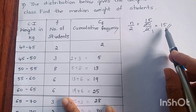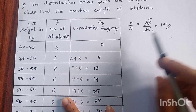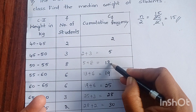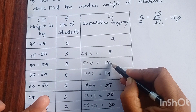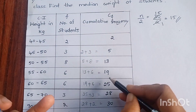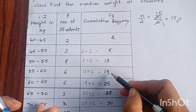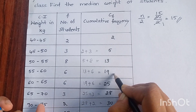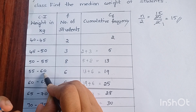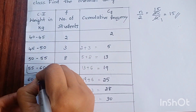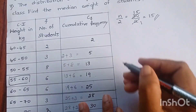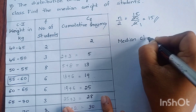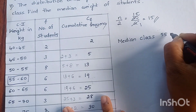Now we have to check where this 15 falls in the cumulative frequency table. Look at this: 13 is smaller than 15, so we will not take this. The next cumulative frequency is 19, and 15 falls within this interval. So this is our median class — that is 55 to 60. The median class is 55 to 60.